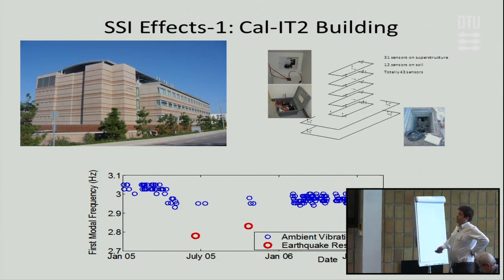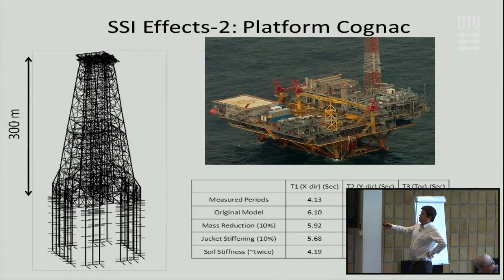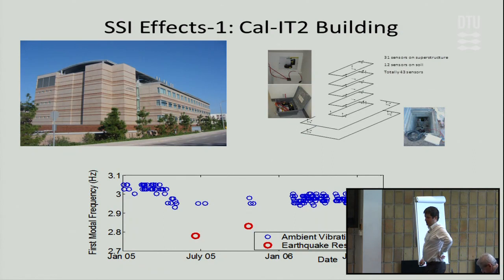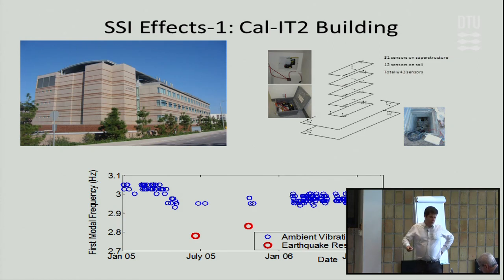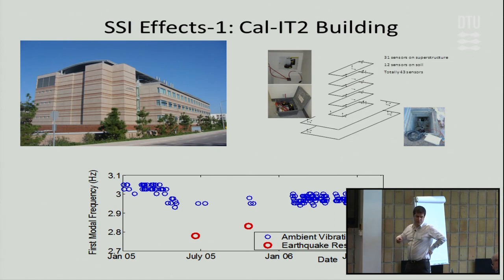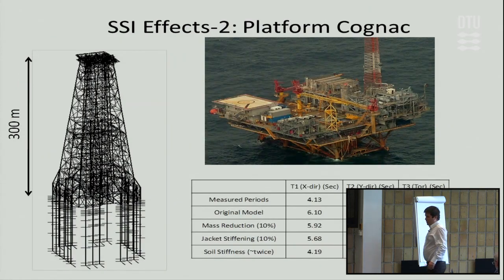There was a study on a building at the University of California Irvine campus. We collected ambient vibration data and performed analysis to find frequency. We saw a decrease during the earthquake, which is expected, but there is also a permanent frequency shift after the earthquake. During and after seismic events, this behavior is expected.